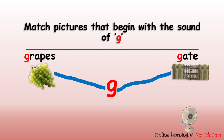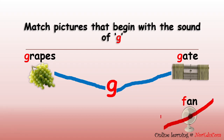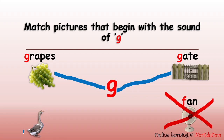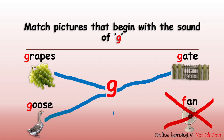Can you name this picture? Yes, this is a fan. F, f, fan. It starts with the letter F, sound of F — not sound of G. So do not match it. Let's cross it out. Can you name this animal? Yes, this is a goose. G, g, goose. It starts with the letter G, sound of G. So let's match it. Well done, everybody.